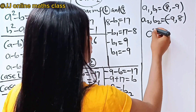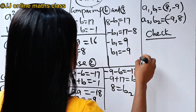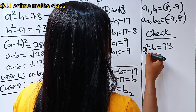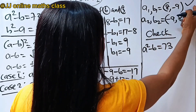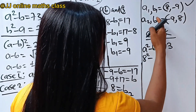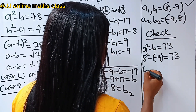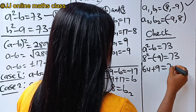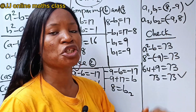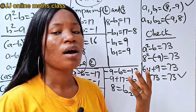Let's verify. Using the first equation a squared minus b equals 73, with a equals 8 and b equals minus 9: 8 squared minus minus 9 is 64 plus 9 equals 73, which confirms 73 equals 73. You can substitute these values into any of the original equations to confirm the solution.